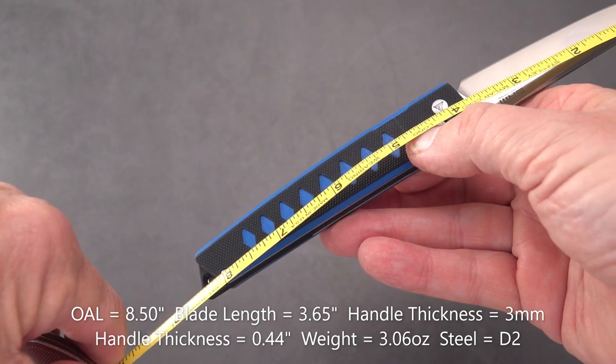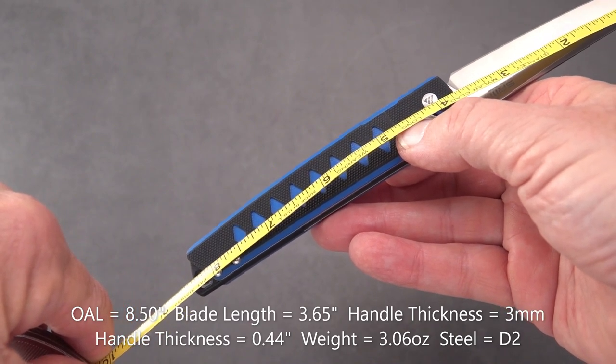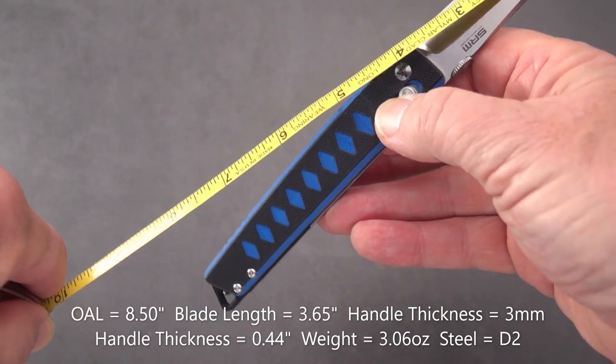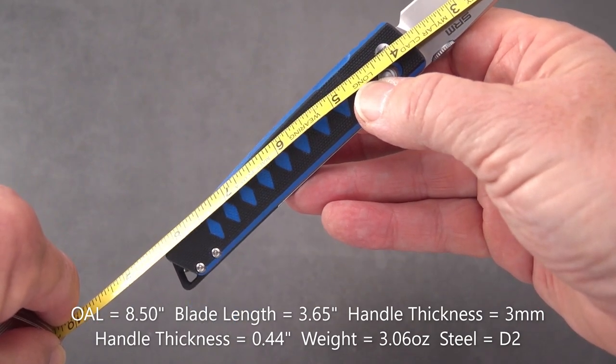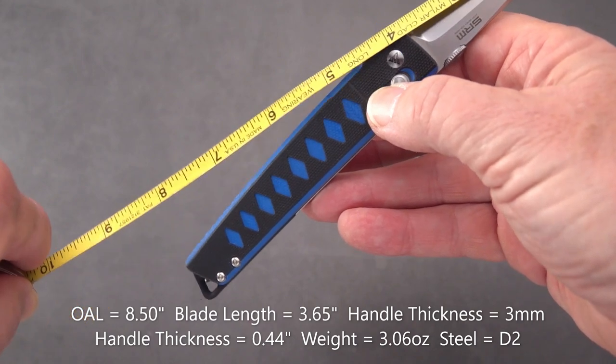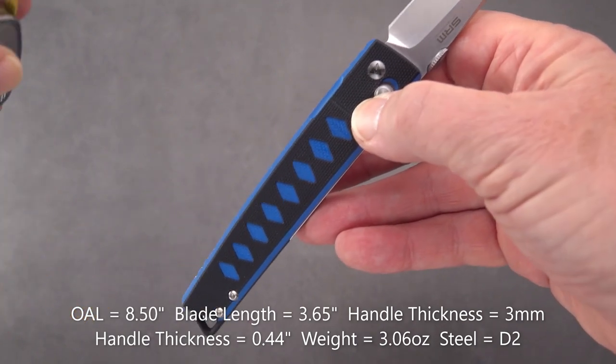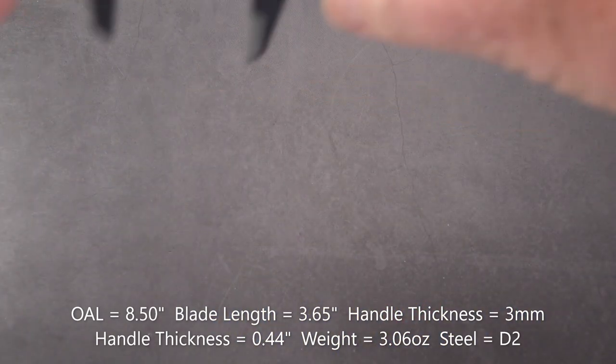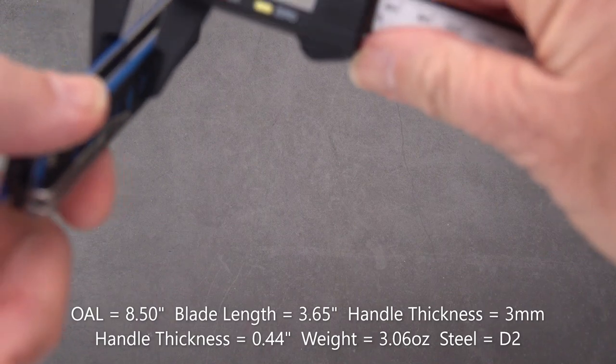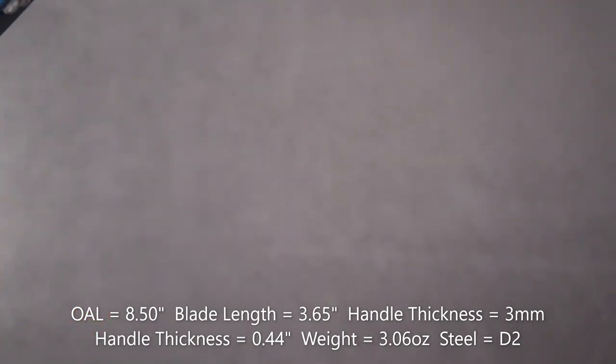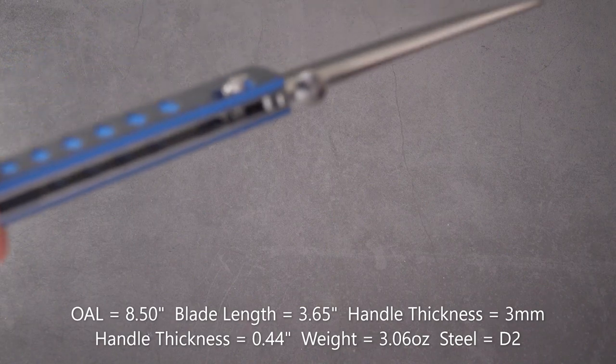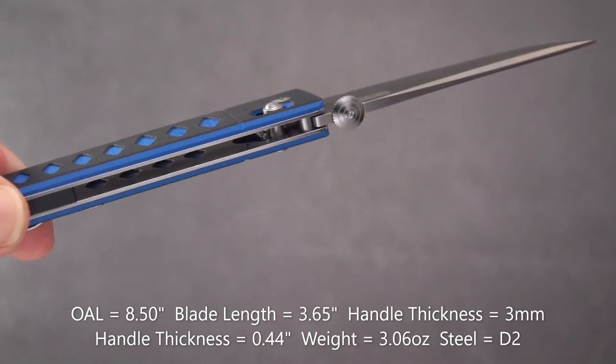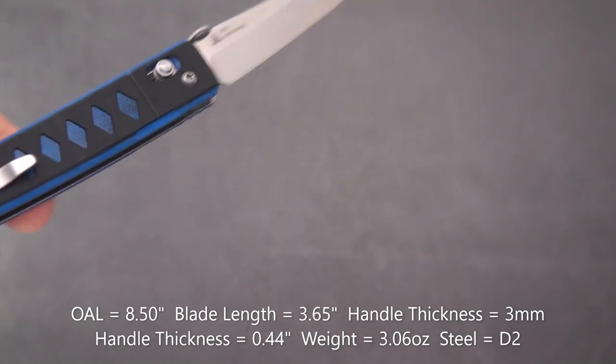If we take it right out to that end of that lanyard hole, we've got 8.5 inches. We've got a blade of about 3 5/8s. Cutting edge about the same. For thicknesses, we're talking pretty slim, 0.44 across the handle. And we've got some cutouts in there that are shaped in a diamond sort of pattern similar to the design on the handle.